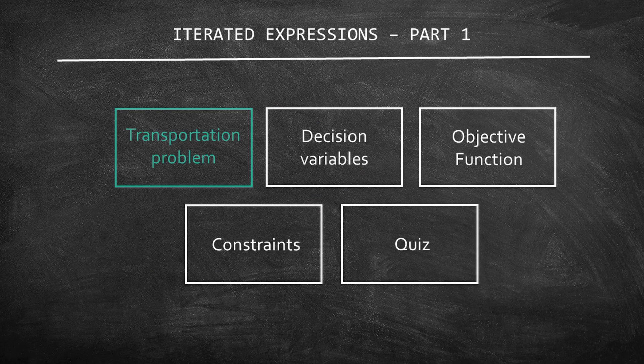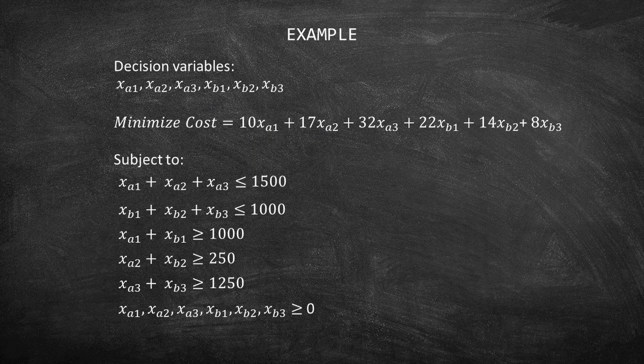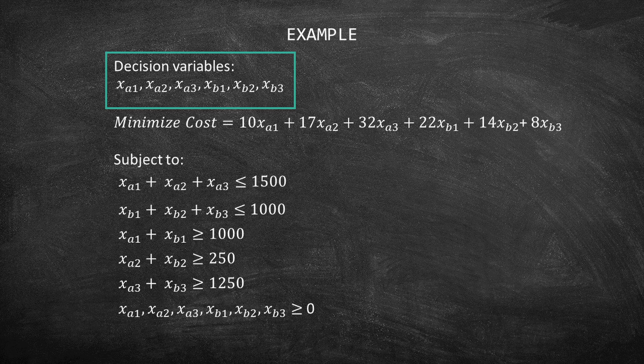Now that you are aware of the problem, let's rewrite the decision variables. The problem has six decision variables: xA1, xA2, xA3, xB1, xB2, and xB3.